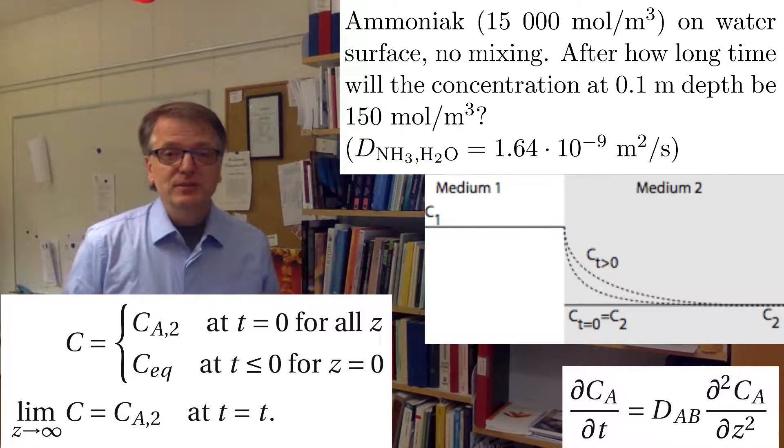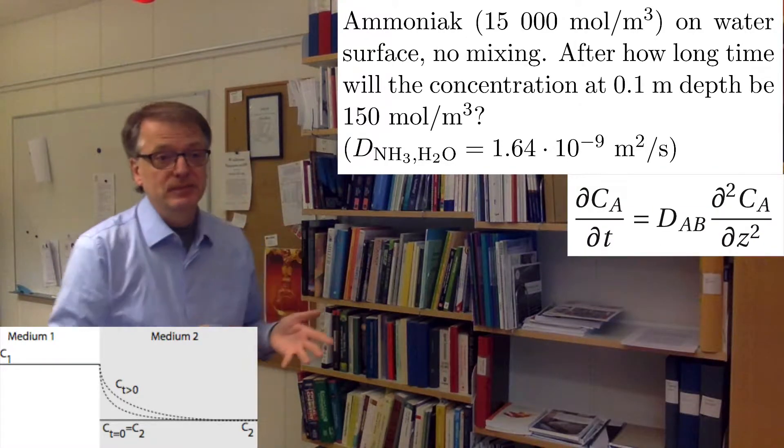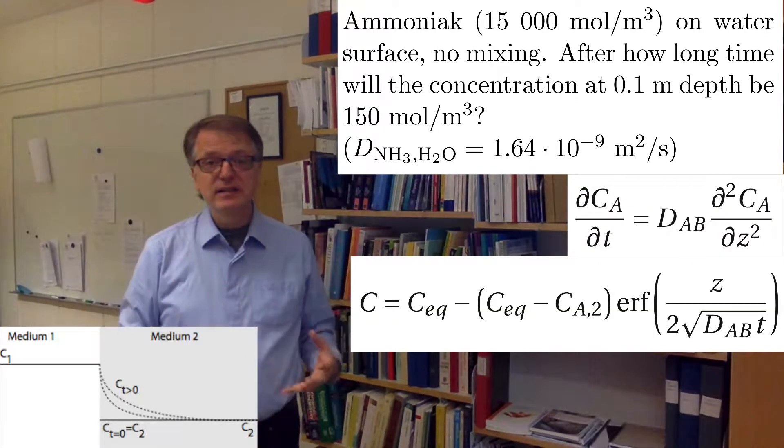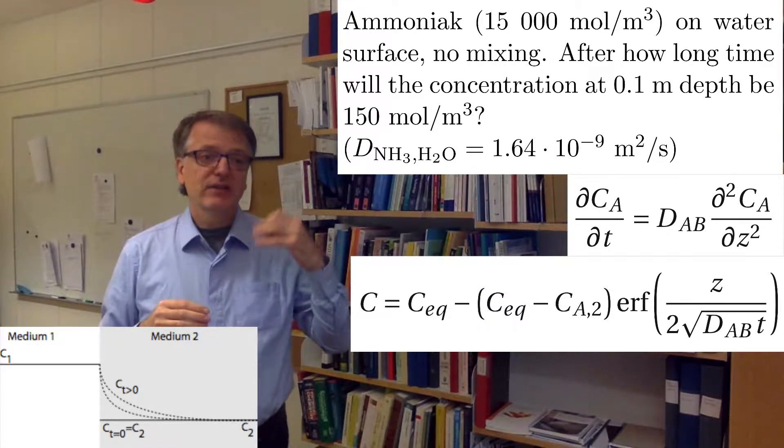And the solution is far from trivial, but it looks like this. So at a certain distance, z into medium 2, the concentration is given by this: the concentration equals the equilibrium concentration minus, and then parenthesis...